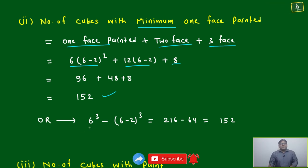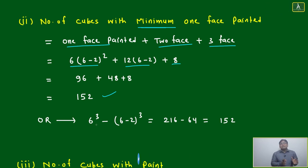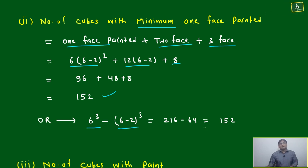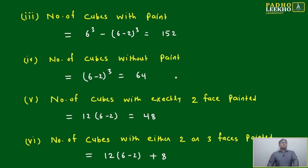We can also think in a lateral or reverse way. Minimum one face painted means total number of cubes minus cubes with no face painted: 6³ minus (6−2)³, which gives 216 minus 64 = 152.